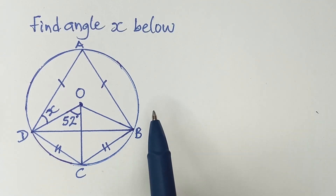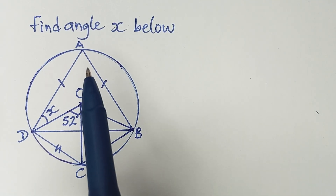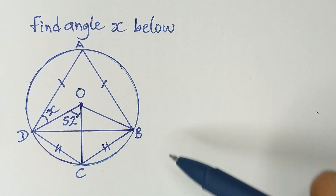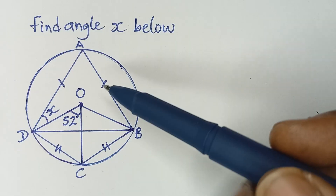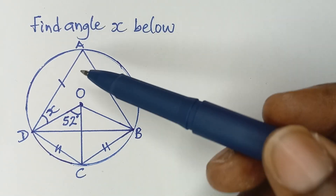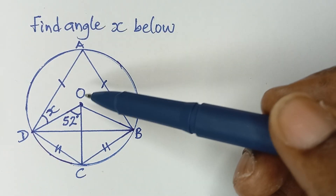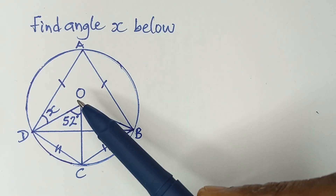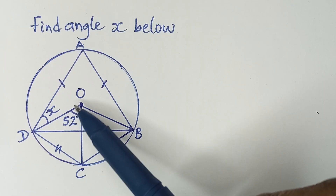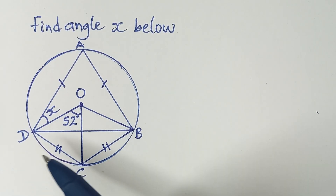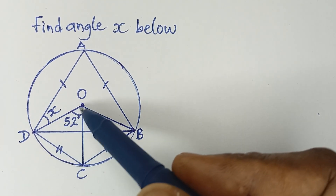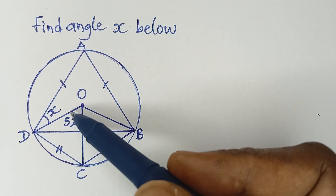Hello, you are welcome to my channel. The question I have today says: find angle x below. So we are looking at this circle geometry, and I want to solve this question in a very different way. If you already have ideas about circle geometry, my method is going to be different from yours, so I'd like you to use your method and comment in the comment section below.